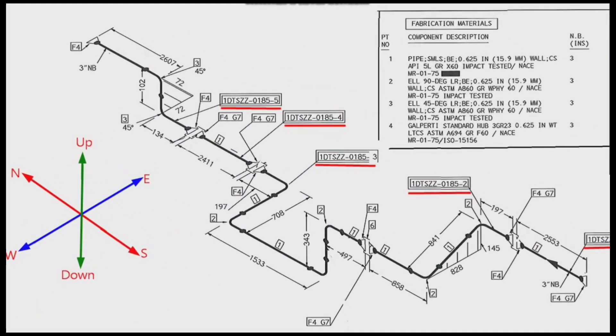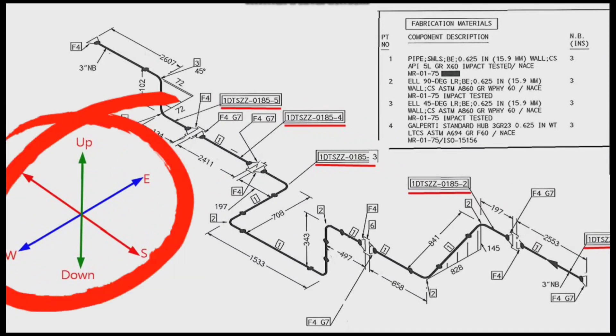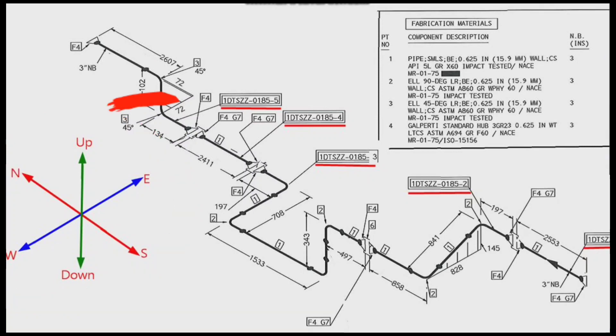Every pipe drawing has such a sketch. This indicates the directions. By studying these directions, we can easily read the pipe isometrics.